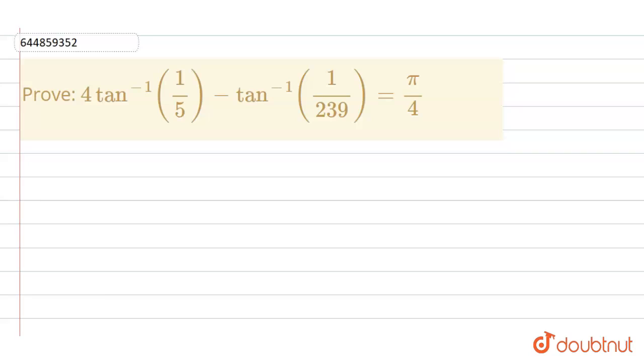Hello guys, welcome to Doubtnet. Today's question, we have to prove 4tan inverse of 1 by 5 minus tan inverse of 1 by 239 equals to pi by 4.